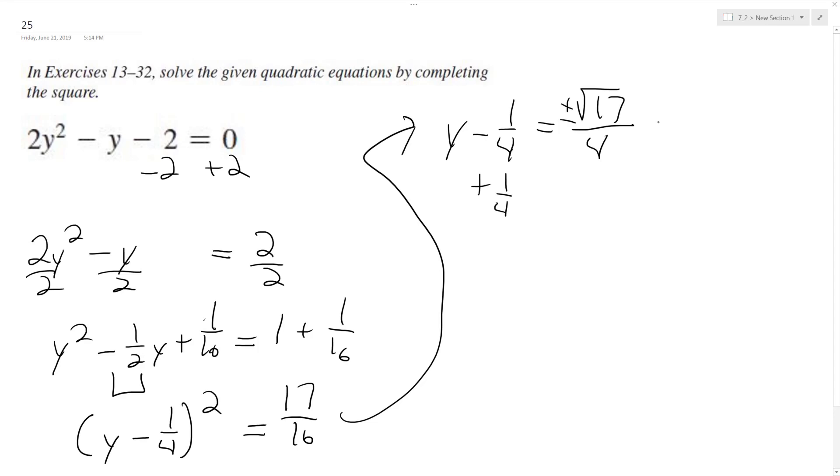Add 1/4th to both sides. And we end up with y equals plus or minus the square root of 17 over 4 plus 1/4th. Or you could write it like this: plus or minus the square root of 17 plus 1 all over 4.